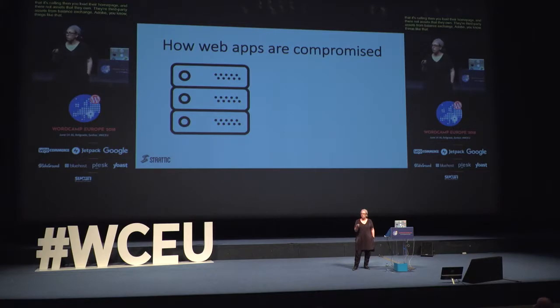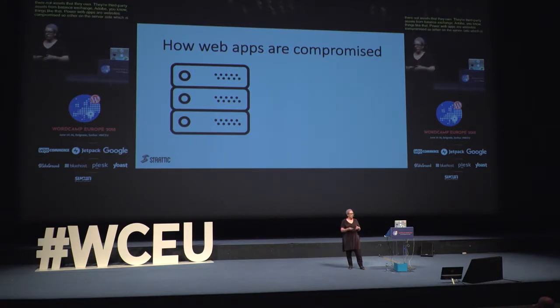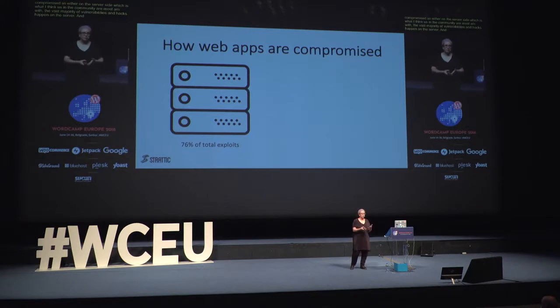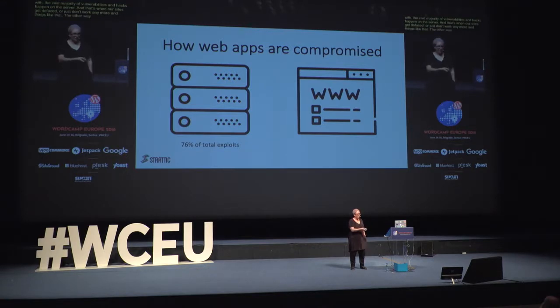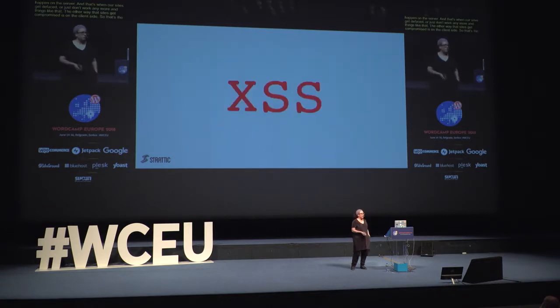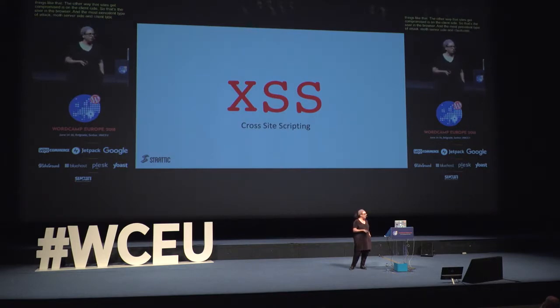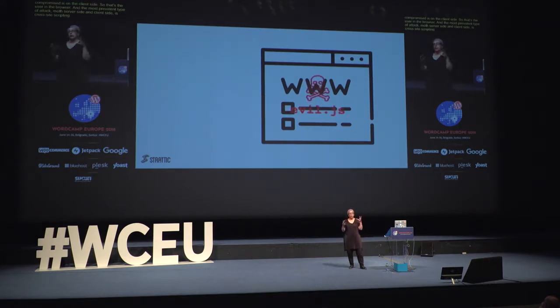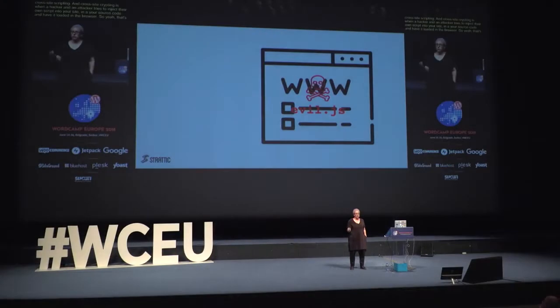How are web apps or websites compromised? Either it's on the server side, which is what most of us in the community are most familiar with. The vast majority of vulnerabilities and hacks happen on the server — that's when our sites get defaced or just don't work anymore. The other way sites get compromised is on the client side — the user in the browser. The most prevalent type of attack, both server-side and client-side, is cross-site scripting. Cross-site scripting is when a hacker tries to inject their own script into your site, into your source code, and have it loaded in the browser. It can originate on the server or on the client side.